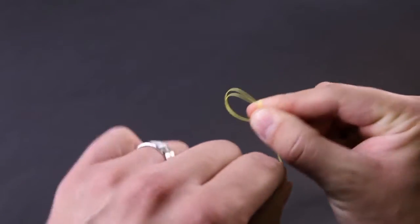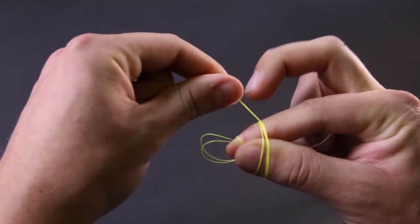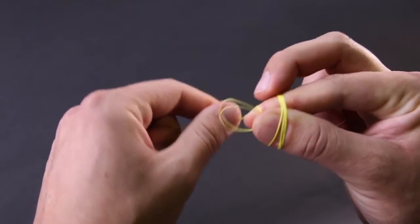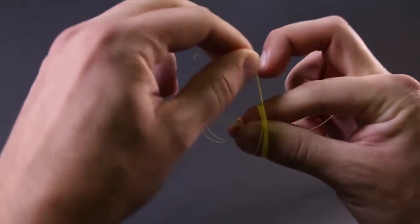With the tag end start wrapping it around those two fingers. Some guys like to wrap it only around their pointer. Either way get to about six or seven wraps. You can even hold those wraps with that extra finger if you want.